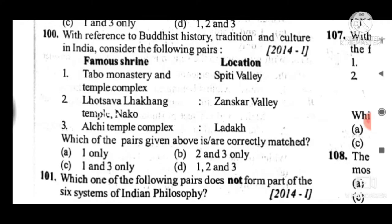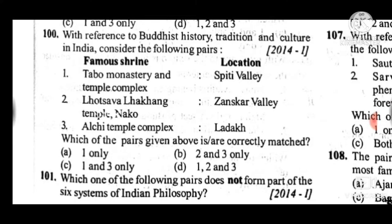Question 100: We have completed the century. With reference to Buddhist history, tradition, and culture in India, consider the following pairs of famous shrine and location. The answer is C — one and three only; statements one and three are correctly matched.